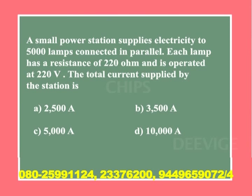The total current supplied by the station is: option A 2500 amperes, option B 3500 amperes, option C 5000 amperes, and option D 10000 amperes.